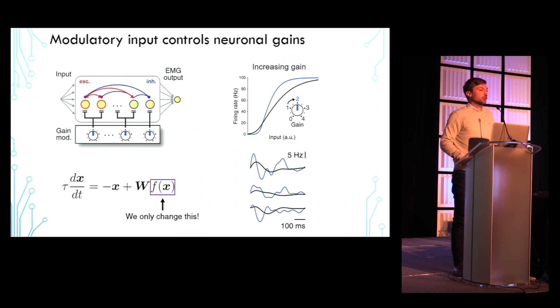These effects of uniform modulation can also be understood analytically if we linearize the gain function F and study changes in the eigen spectrum of the effective connectivity matrix. Therefore, uniform gain modulation can lead to substantially different yet predictable activity trajectories in recurrent networks.